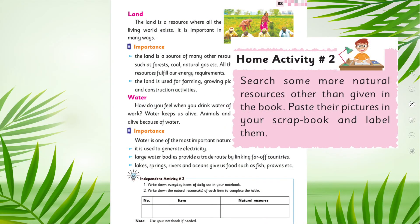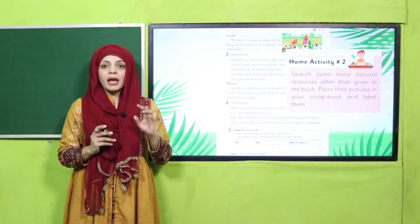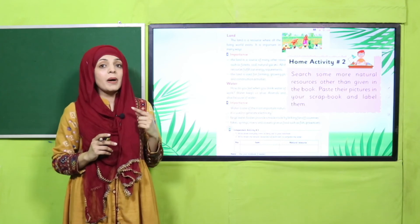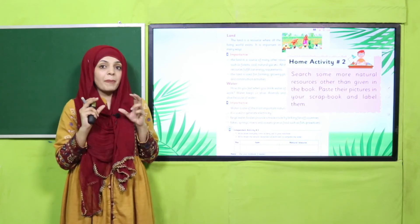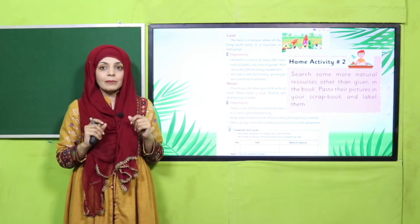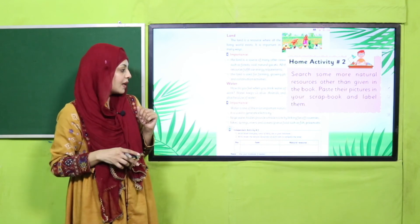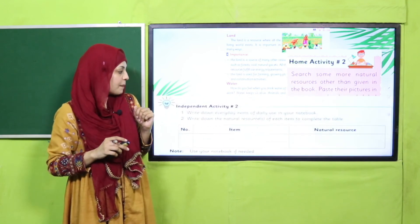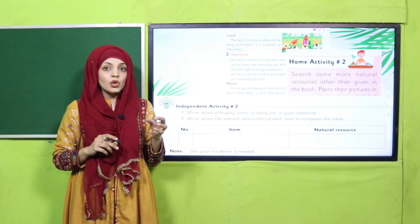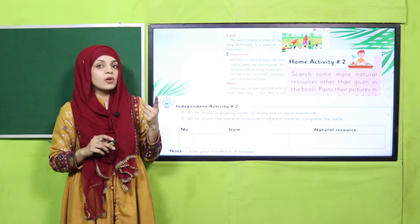Now let's go to your homework. It is on page number 88. Home activity number two: search for some natural resources other than those given in the book, paste their pictures in your scrapbook, and label them. You already know sun, water, air, and land — you have to find some other resources, collect their pictures, paste them in your scrapbook or notebook, and write their names. Independent activity number two: write down the daily items you use and their natural resource — you can do it in your notebook.